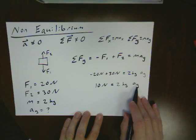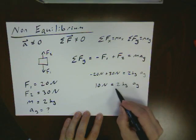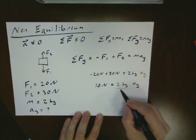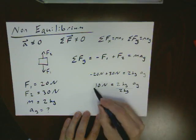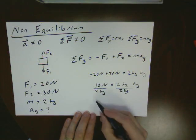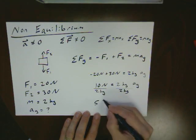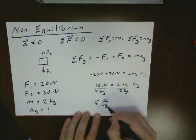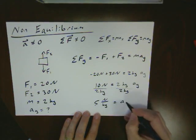Since these two things are multiplied together, in order to separate them, I'd have to divide through by my 2 kilograms. And I see that 5 newtons per kilogram is equal to my acceleration.